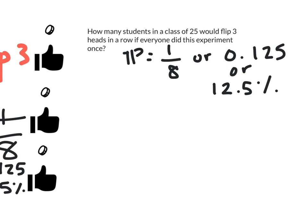So again, to find the percent of a number, a really quick way to do this is 0.125. So that's that theoretical probability as a decimal multiplied by 25 students, 12.5% of 25. And we get an answer of 3.125.